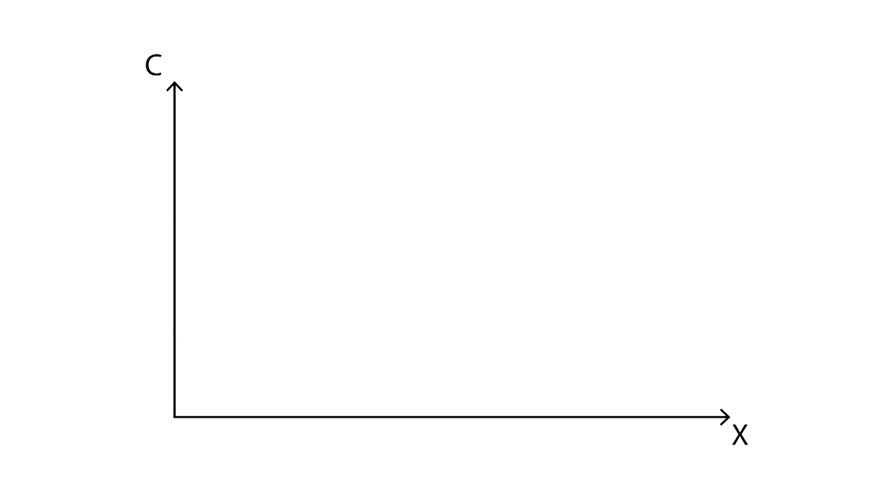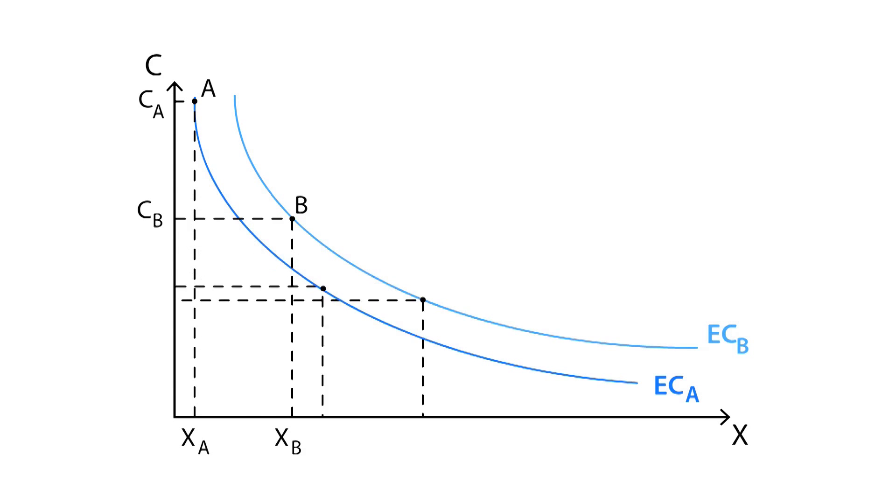In our second scenario, firm B has the same experience curve as before. But here, firm A enters the market with an exclusive technology, which translates into a lower experience curve. Initially, firm A will have higher direct costs than firm B. However, after a while, firm A will produce each unit with lower direct costs than firm B.